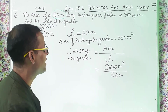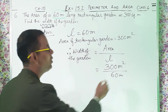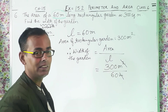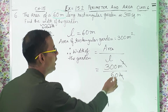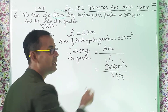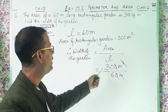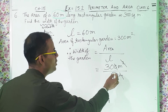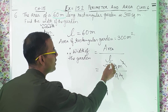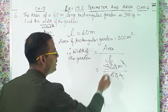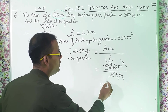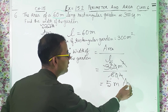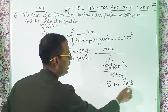Let us come back to the sum. Meter and square cuts. Zeros cut, so 30 divided by 6. 6 ones are 6, 6 fives are 30. So you get 5 meters and this is the answer.